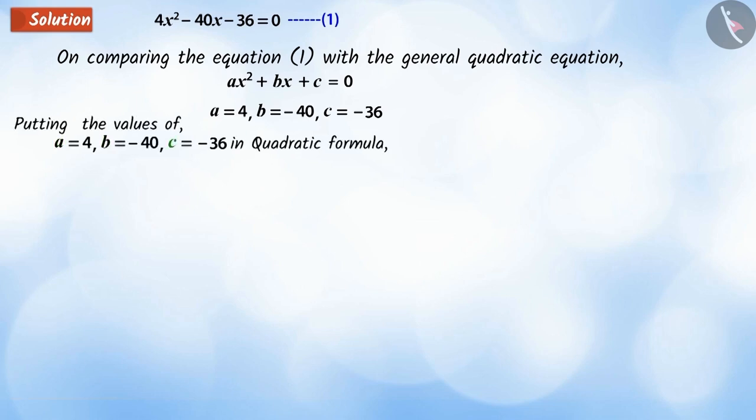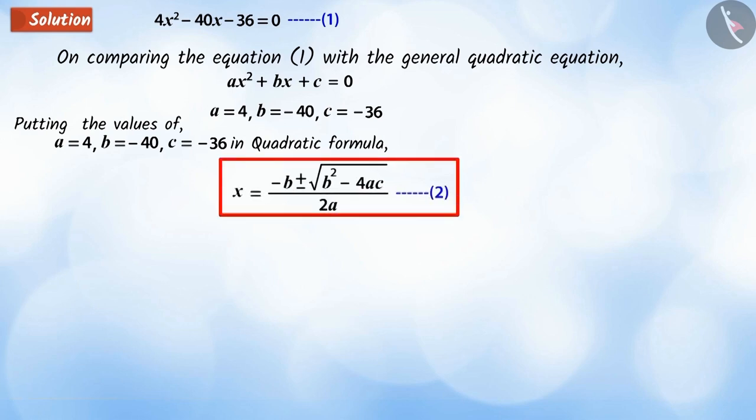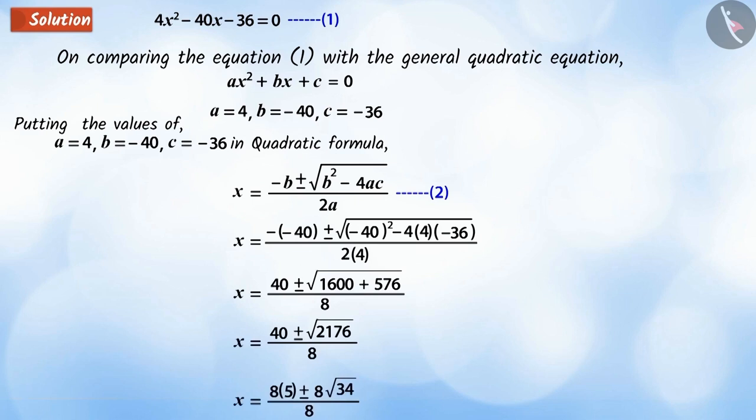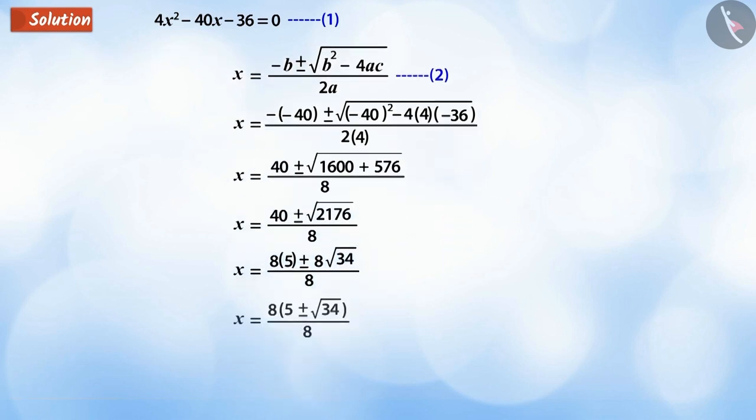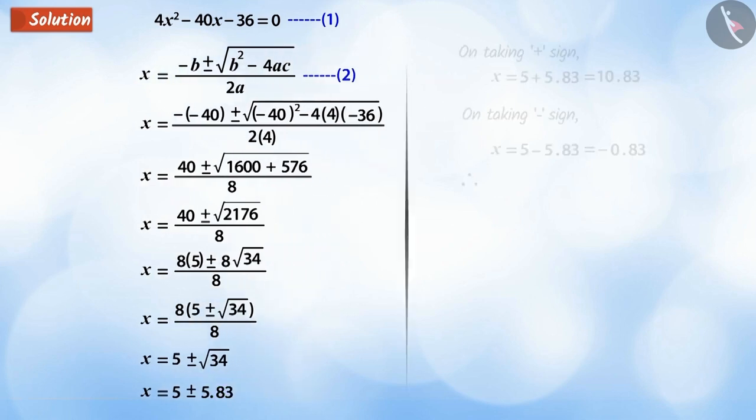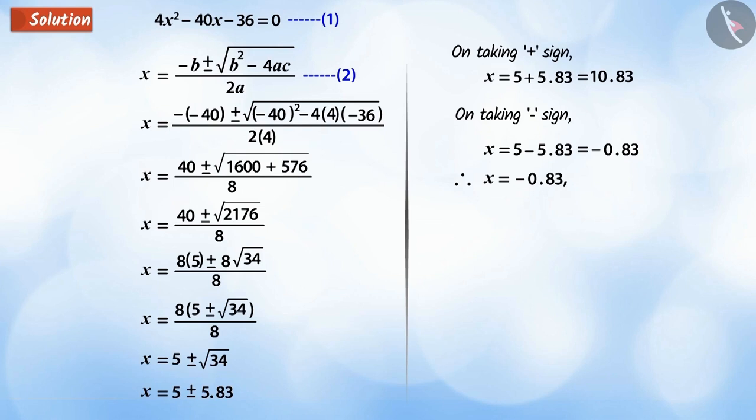Place the values of a, b and c in the quadratic formula that is in equation 2 and solve. On solving, we get x equals 5 plus and minus 5.83. That is, x equals minus 0.83 or x equals 10.83.